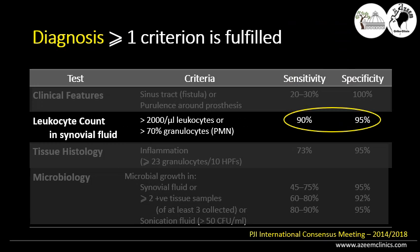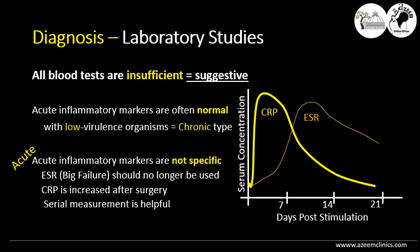The second diagnostic tool is the most reliable, with the highest sensitivity and specificity, which is the detection of the leukocyte count in the synovial fluid. Regarding blood tests and their role in diagnosis, all blood tests are insufficient — they are only suggestive of infection. For example, acute inflammatory markers such as ESR and CRP are often normal with low virulence organisms in chronic cases. Even in acute cases, such as after an operation, you cannot rely on acute inflammatory markers because they are usually elevated due to the surgery itself. So acute inflammatory markers are not specific even in acute infection.